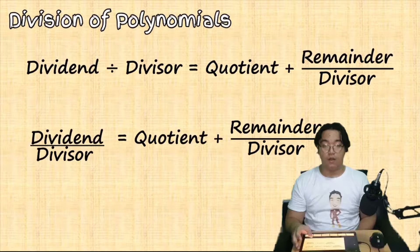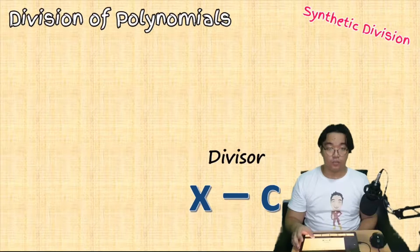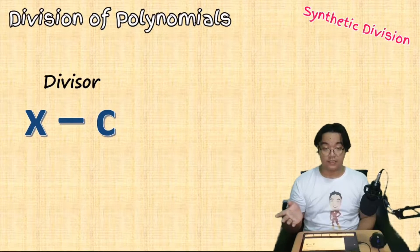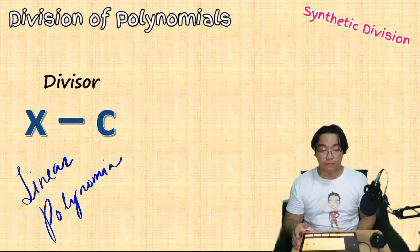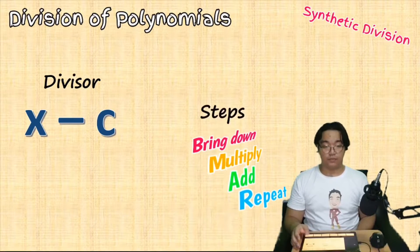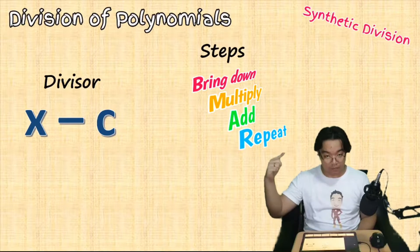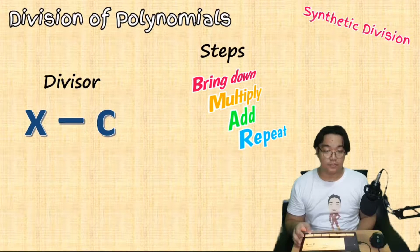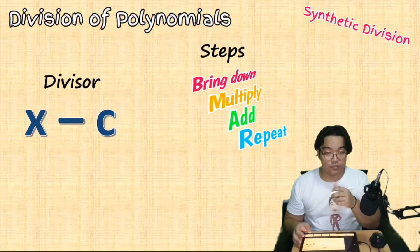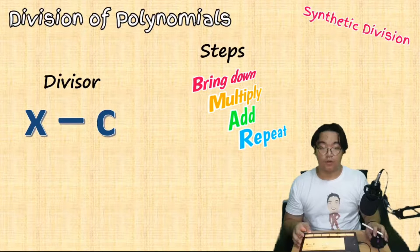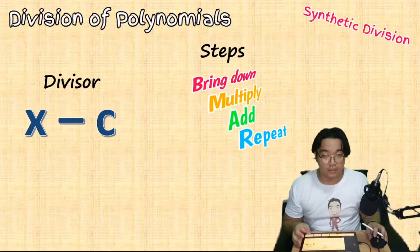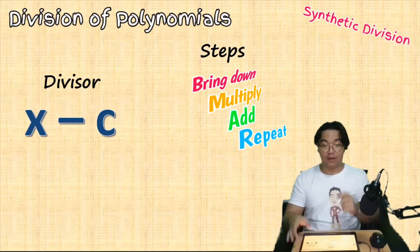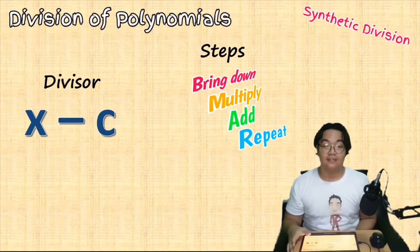Synthetic division can be applied if your divisor is in the form of x minus C, which is a linear polynomial. The process follows only simple steps: we bring down, we multiply, then we add, and we repeat that process until all of the coefficients are used. Synthetic division uses the coefficients of your polynomial.